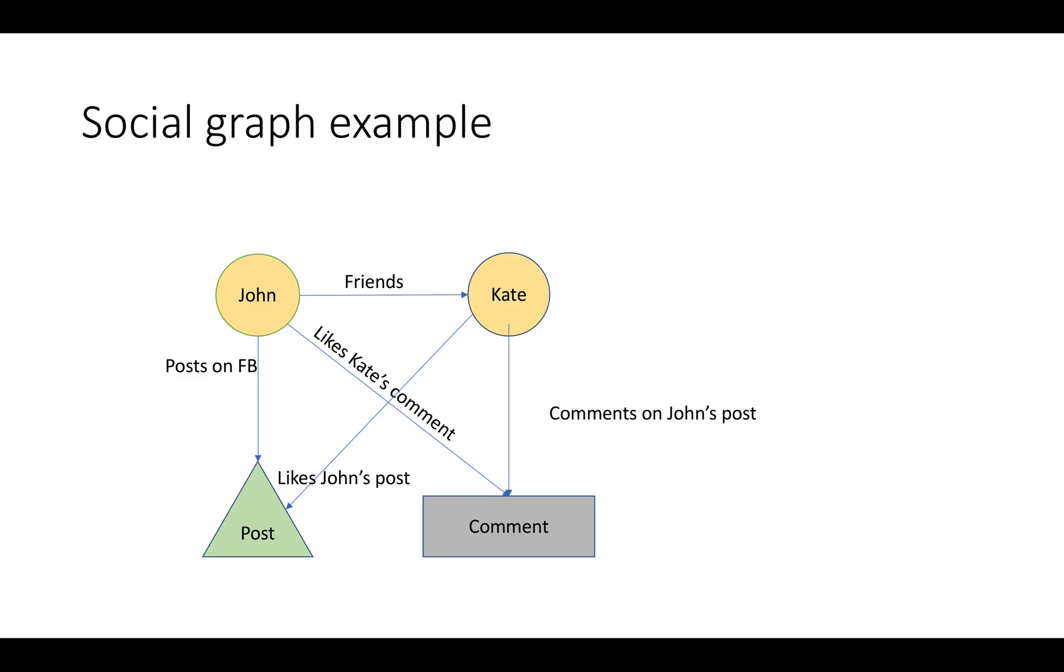Let us take an example where John is friends with Kate and John posts a post on Facebook. Kate comes and likes the John's post and comments on his post. Whereas John likes Kate's comment. So it's a social graph, which helps us to understand the relation between multiple entities. Those entities do not need to be homogeneous, they can be heterogeneous. Graph like structure can help us to represent the relationship between heterogeneous entities and it can be quite complex, which helps us to understand the relationship between various entities.